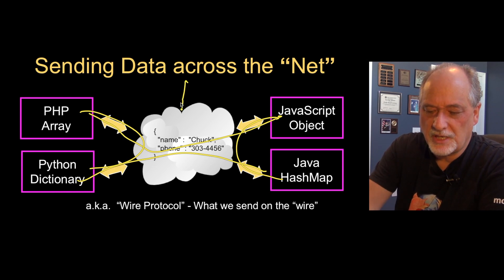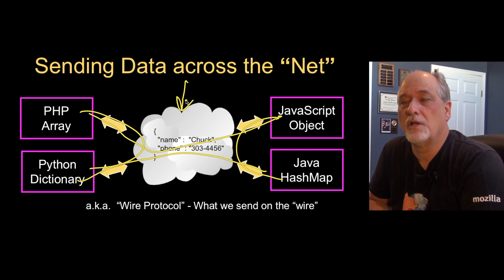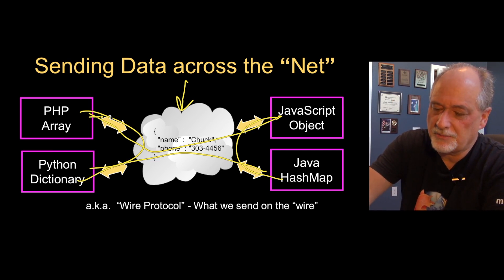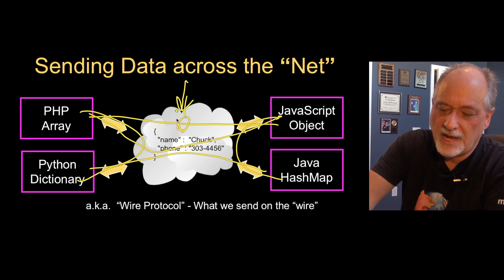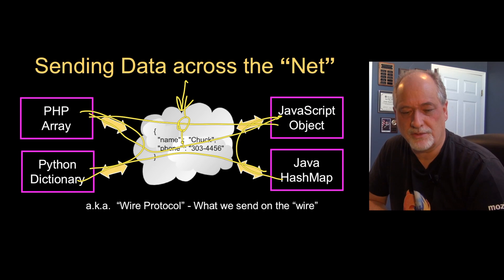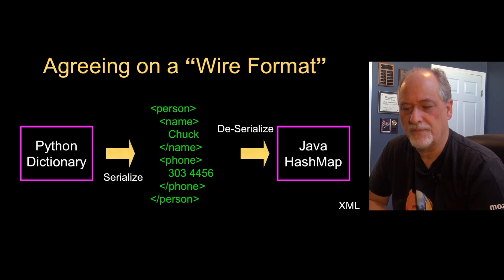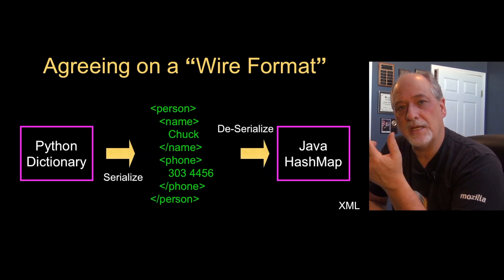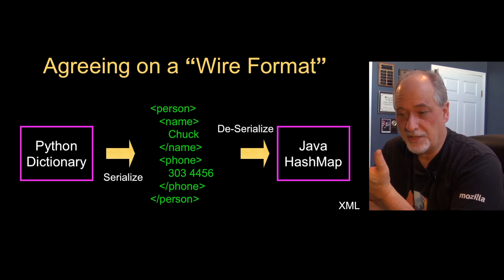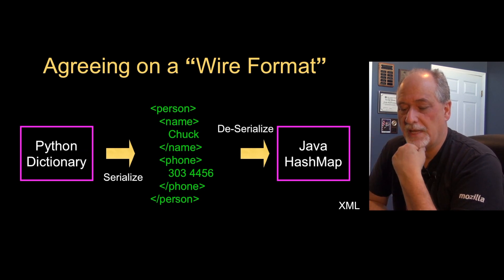And so we have to decide on a protocol that is independent of any programming language. We call that the wire protocol, because if you were to take some connection and watch the exact characters that go back and forth, that's what you would see if you were monitoring the wire. So we have to agree on a format that is going to represent the data, and we can't make it a Python-specific format or a Java format.